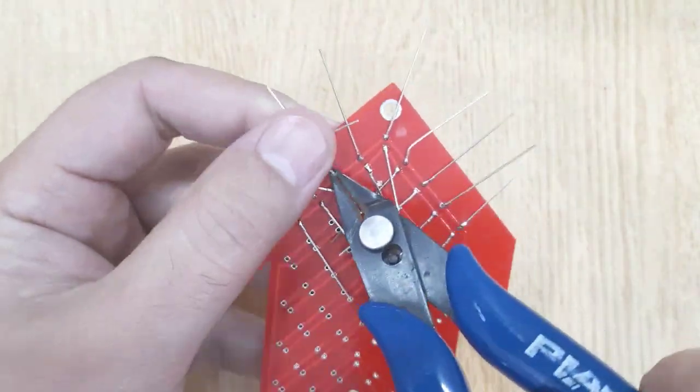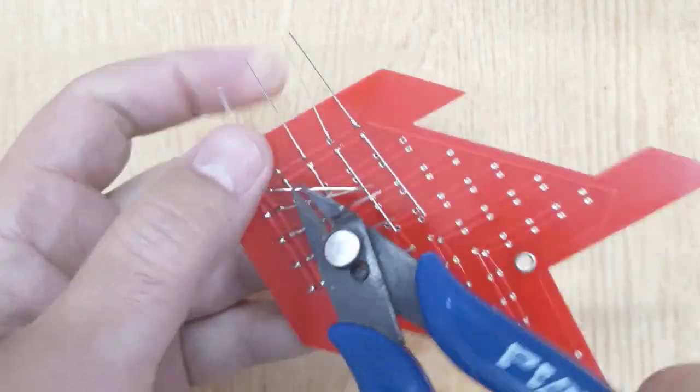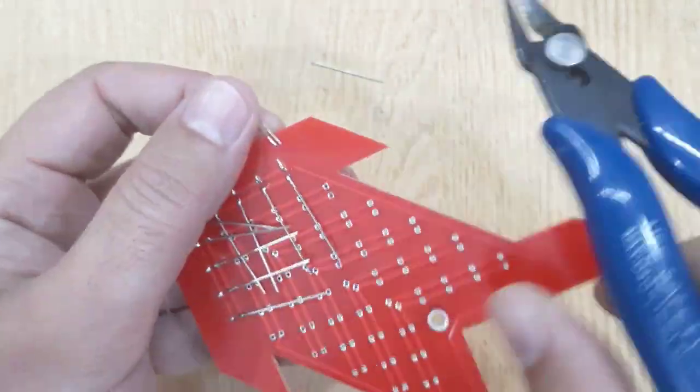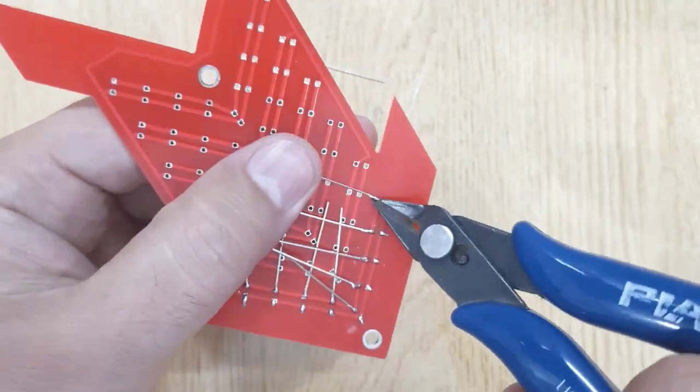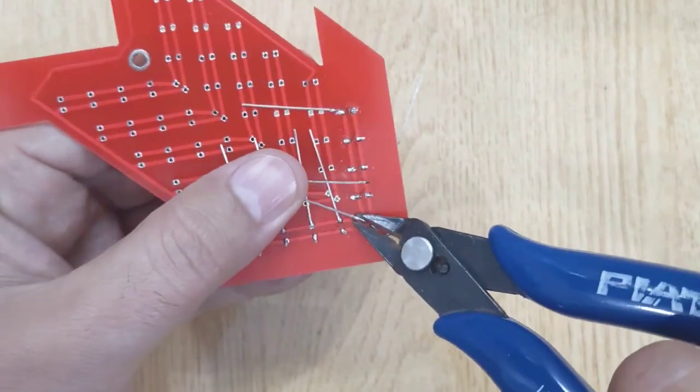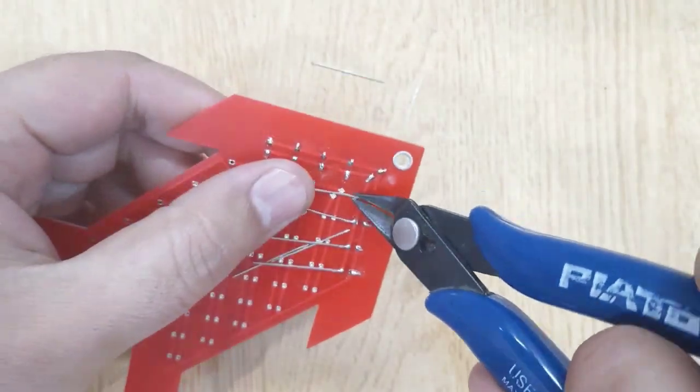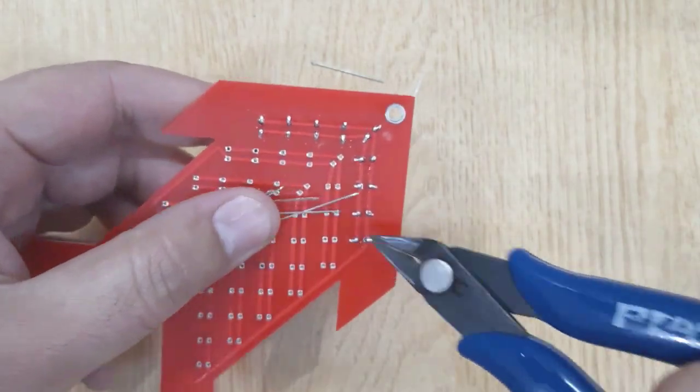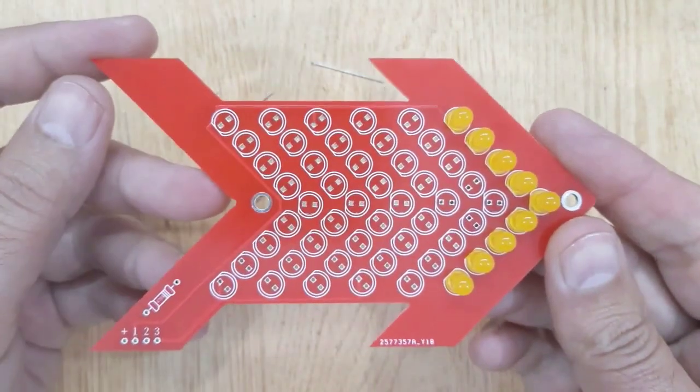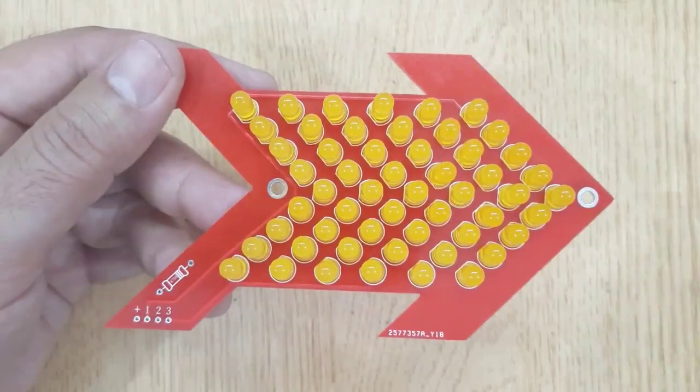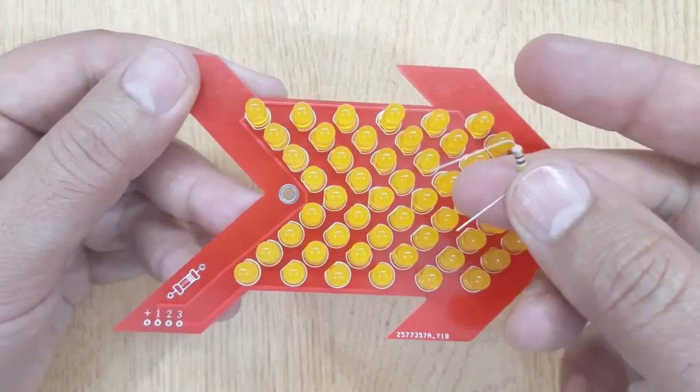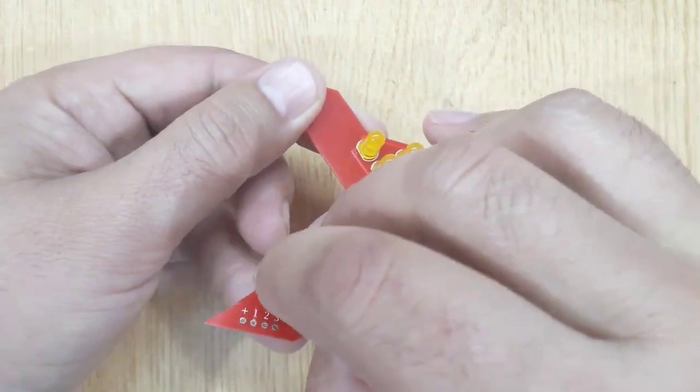Now solder them. Remove the extra pins. Now insert 1K Ohms resistor.